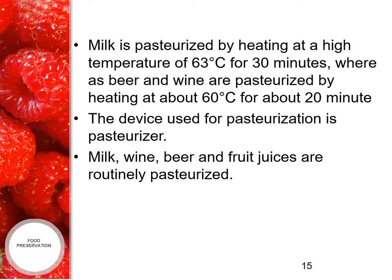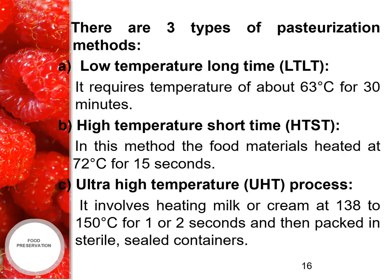Milk is pasteurized by heating at 63 degrees Celsius for 30 minutes, whereas beer and wine are pasteurized by heating at about 60 degrees Celsius for 20 minutes. The device used for pasteurization is a pasteurizer. There are three types of pasteurization methods: first, low temperature long time (LTLT), requiring about 63 degrees Celsius for 30 minutes; second, high temperature short time (HTST), where food is heated at 72 degrees Celsius for 15 seconds; and third, ultra high temperature (UHT), which involves heating milk or cream at 138 to 150 degrees Celsius for 1 to 2 seconds and then packed in a sealed container.